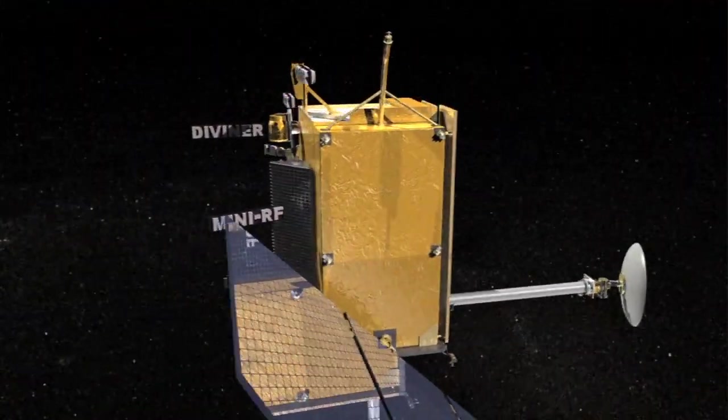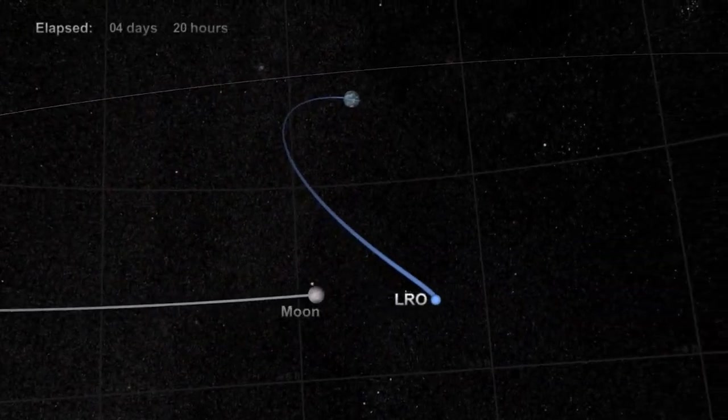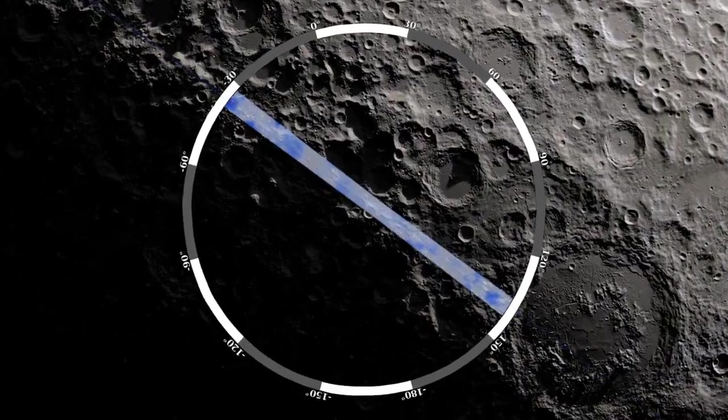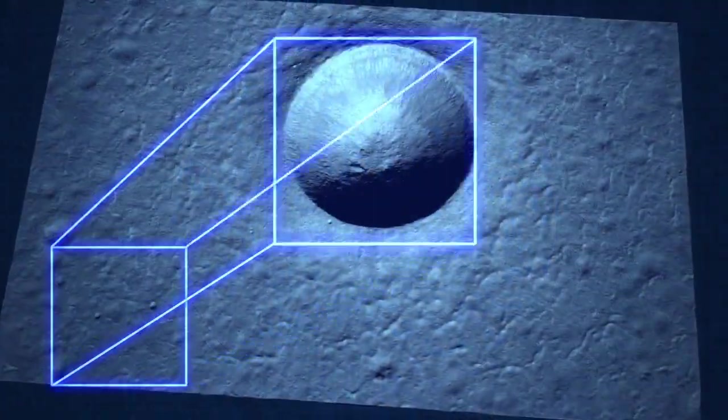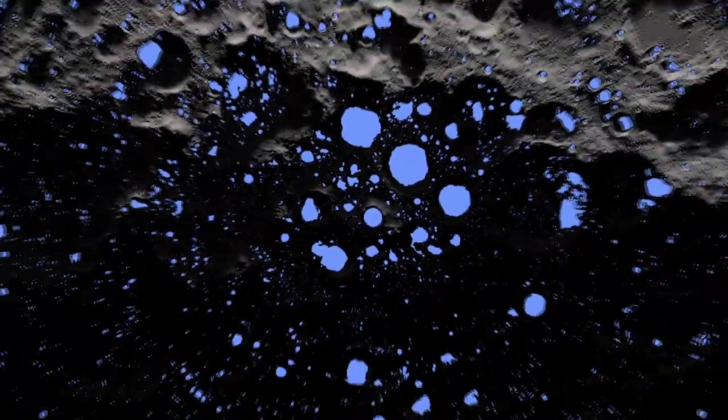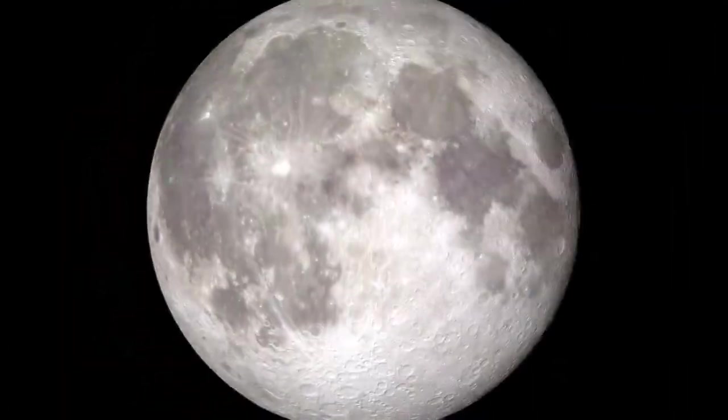LRO is this amazing spacecraft that has seven science instruments on it. It's been in orbit around the moon since June of 2009 and it's collecting all sorts of data to help NASA make really good decisions in the future about where to send robotic spacecraft and humans and to address fundamentally important science questions not only about the moon but about the solar system in general.